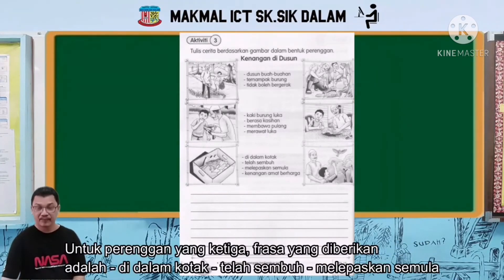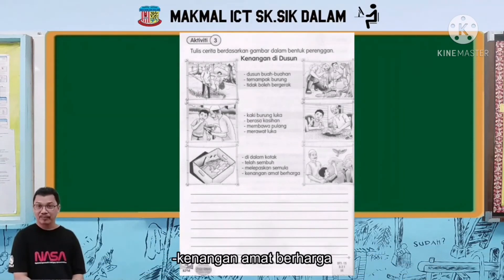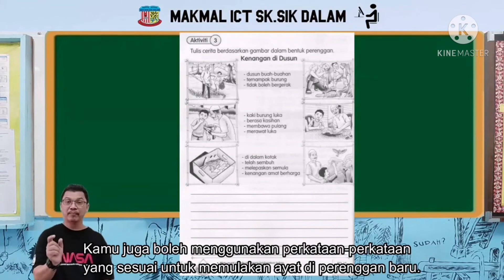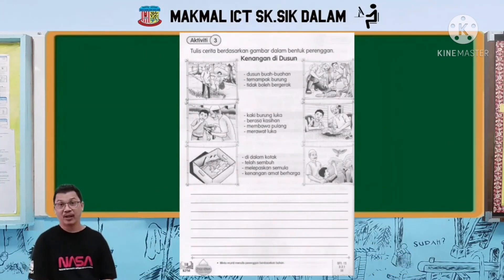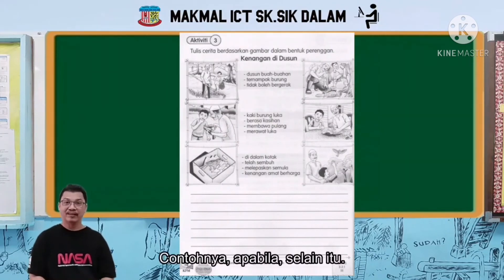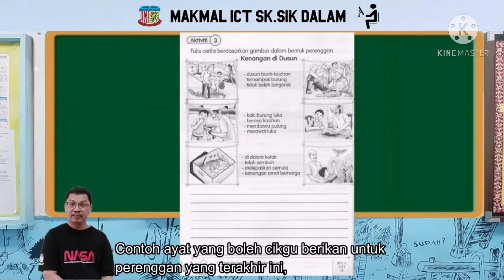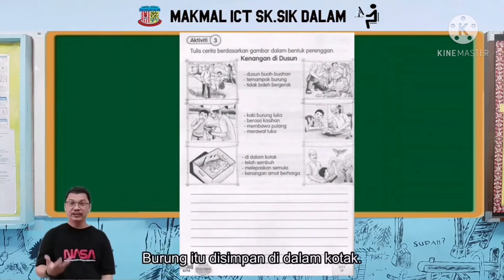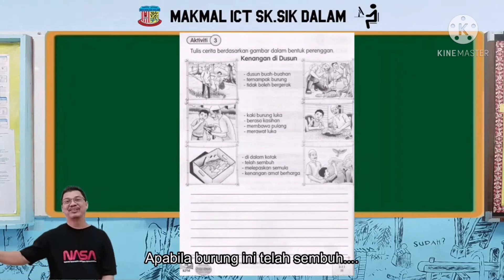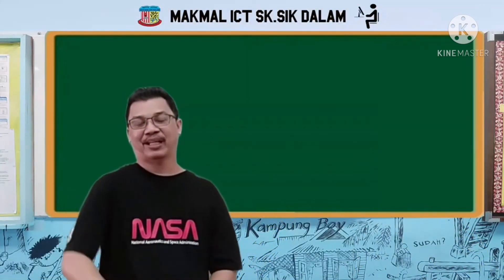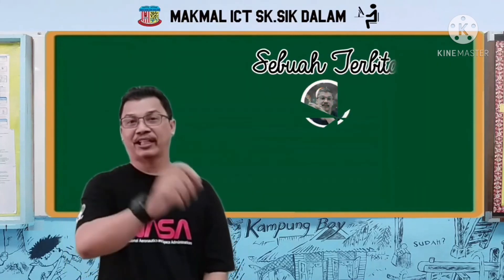Dan untuk perenggan yang ketiga, frasa yang diberikan adalah: di dalam kotak, telah sembuh, melepaskan semula, kenangan amat berharga. Kamu juga boleh menggunakan perkataan-perkataan yang sesuai untuk memulakan ayat. Untuk peringkat yang lebih tinggi, biasanya kita panggil penanda wacana, tapi untuk kamu gunalah yang mudah. Contohnya: burung itu disimpan dalam kotak. Apabila burung ini telah sembuh, kamu sembuhkan seterusnya. Selamat menjawab, dan pastikan ejaan kamu betul dan juga tulisan kamu kemas.